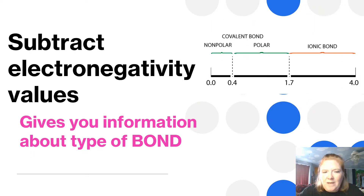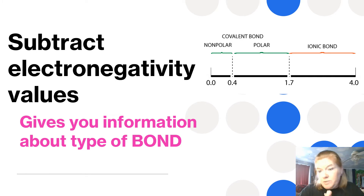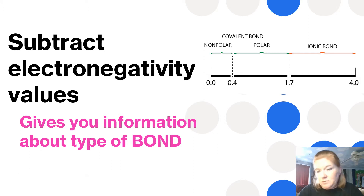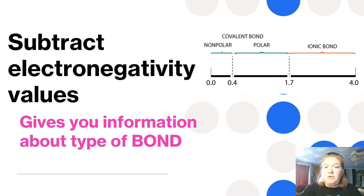When we subtract electronegativity values, it gives us information about the type of bond. Here's our general guideline: if the difference is between 0 and 0.4, it's nonpolar. If it's between 0.4 and 1.7, it's a polar bond. And if it's greater than 1.7, it's an ionic bond.